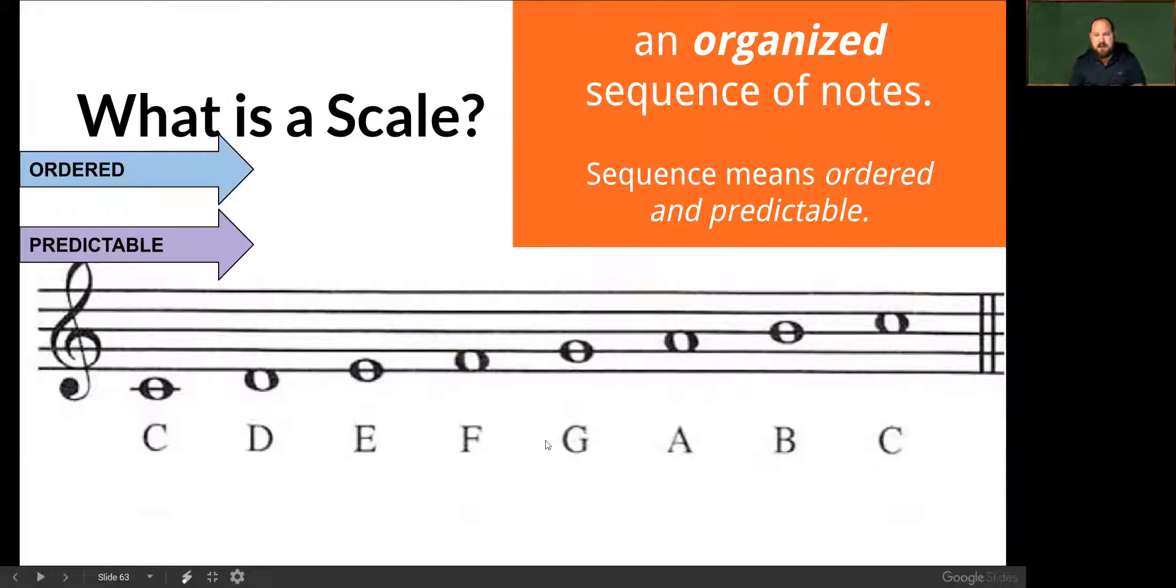And I want you to also notice that if we were to add our names of our notes to this, we also see a predictability and order. C, D, E, F, G, A, B, C. Sounds like a scale to me. Also sounds like do, re, mi, fa, sol, la, ti, do, which is exactly what it is. And you'll notice that one do and the other do have the same letter name. And then if we add the degrees of our scale, then we get eight different pitches.